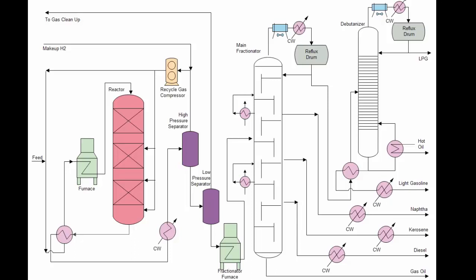Hydro-cracking consumes a vast quantity of hydrogen. Normally, a separate hydrogen unit must supply the additional hydrogen over and above the hydrogen a reformer can normally provide.